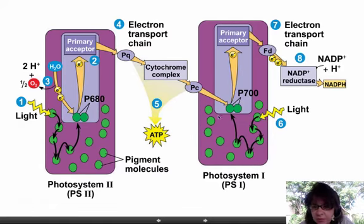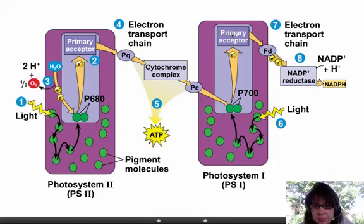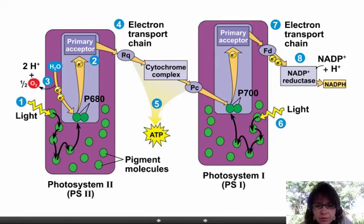It turns out the Calvin cycle needs more ATP than it needs NADPH. So sometimes when enzymes in the chloroplast detect an imbalance, the primary electron acceptor actually delivers its electrons in a circular arrangement to make a little bit more ATP. That's like level two information.